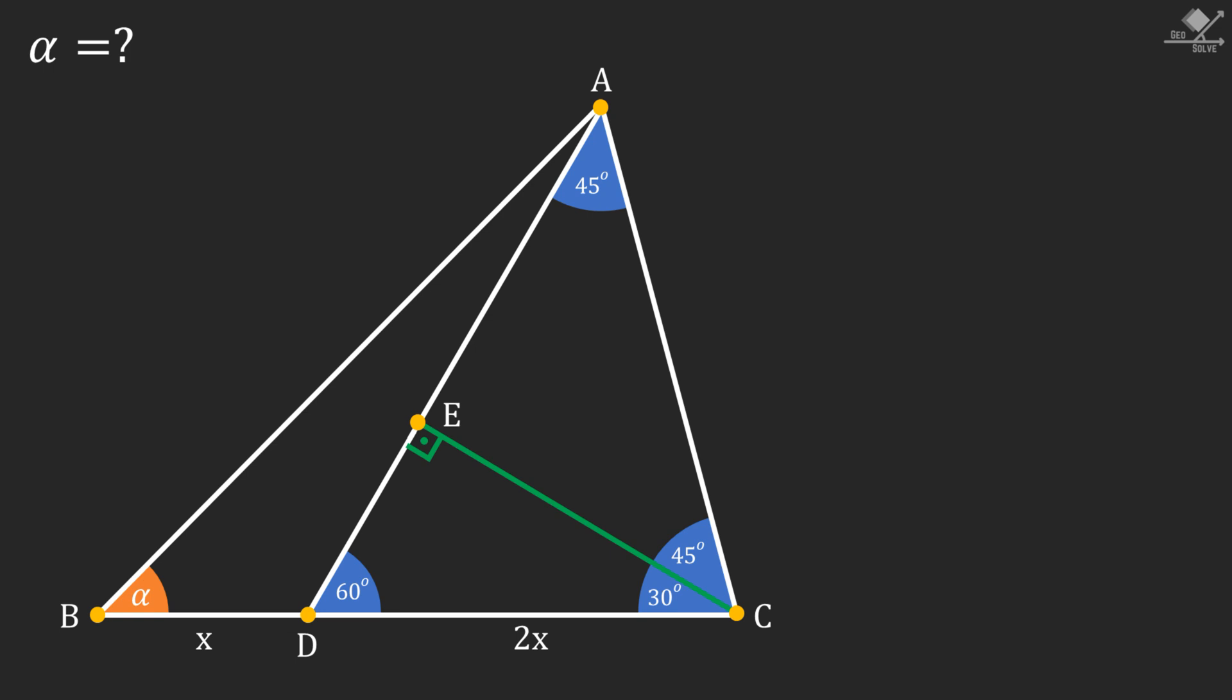Now remember that the side corresponding to 30 degree angle in a 30-60-90 triangle will be half of the hypotenuse, and the side corresponding to 60 degree angle will be root three times the side corresponding to 30 degrees. From here, line segment DE will be X units and line segment EC will be X root three units.